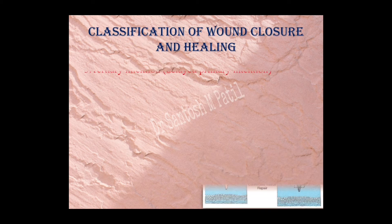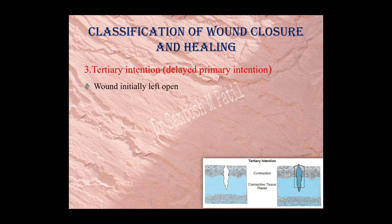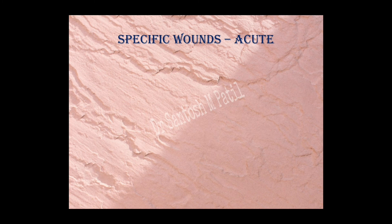Tertiary intention — also called delayed primary intention — is where the wound is left open to heal and then the edges are approximated later when healing conditions are favorable, usually when there is a lot of infection. Everything heals first, and then suturing is done later to approximate the edges.